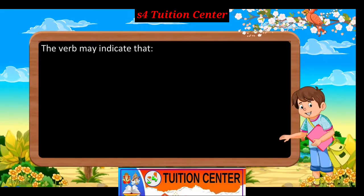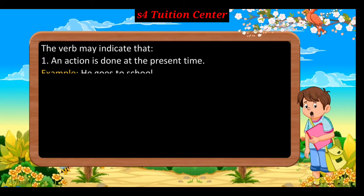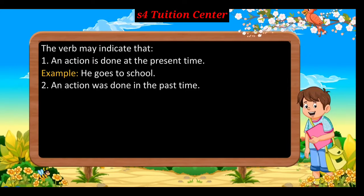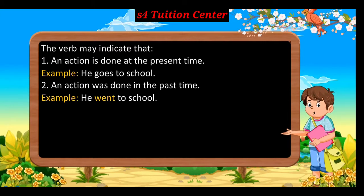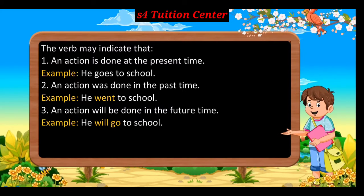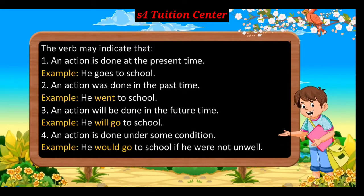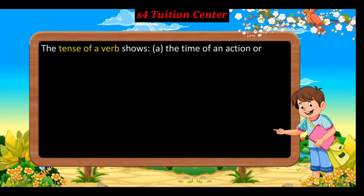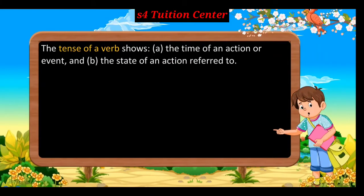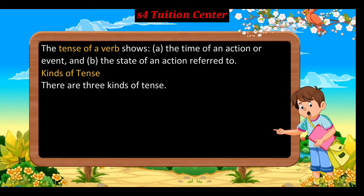Tense: the verb may indicate that first, an action is done at present time — example: he goes to school; second, an action was done in the past time — example: he went to school; third, an action will be done in the future time — example: he will go to school; fourth, an action is done under some condition — example: he would go to school if he were not well. The tense of a verb shows: a) the time of an event or action, and b) the state of an action referred to.